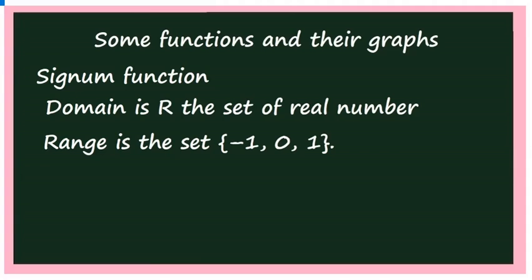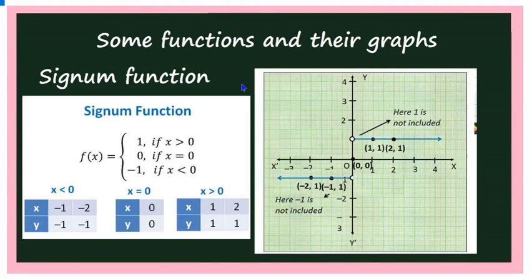Next, let us draw the graph of the signum function. The definition says f(x) = 1 if x > 0, f(x) = 0 if x = 0, and f(x) = −1 if x < 0. When x = −1, f(x) = −1. When x = −2, f(x) = −1. For every negative real number, f(x) = −1. So f(−2.5) = −1, f(−100) = −1. Let us complete the graph on the left side of the y-axis.